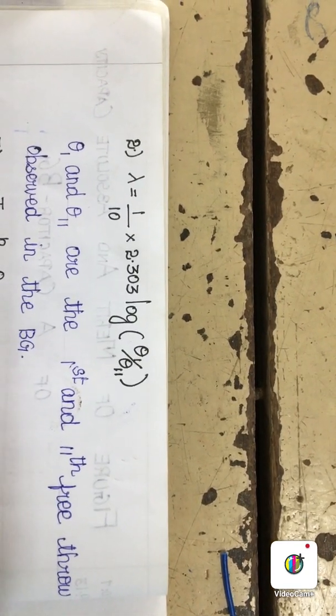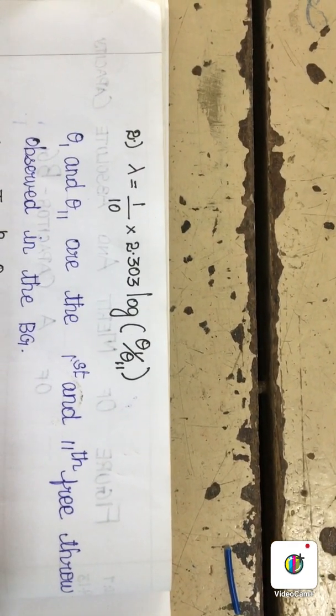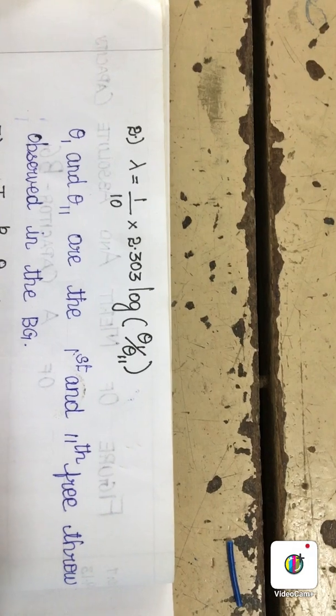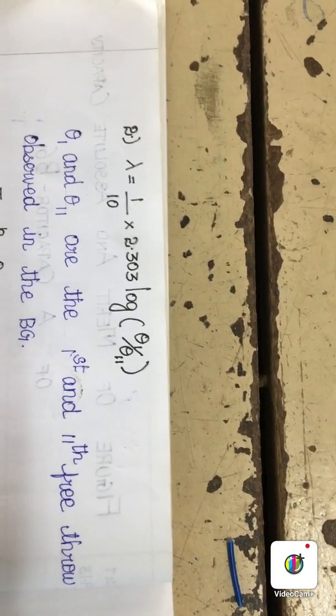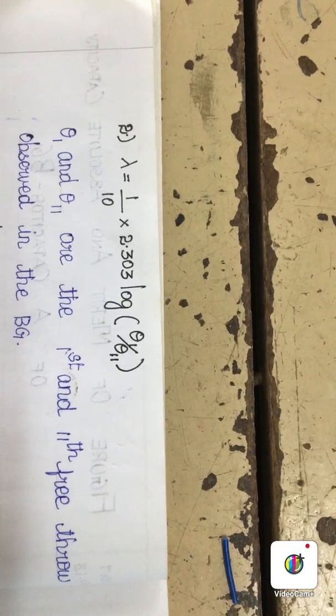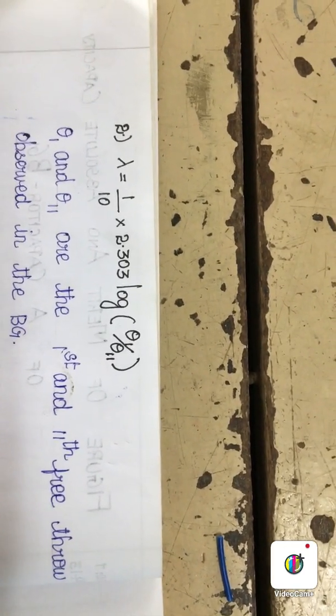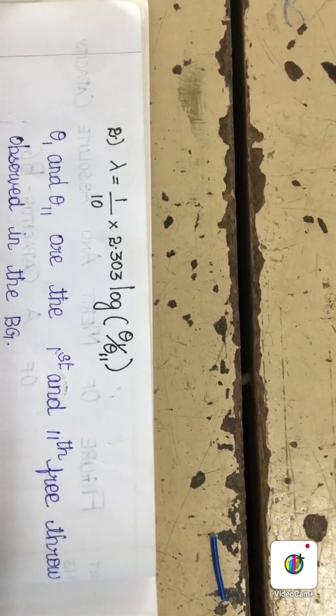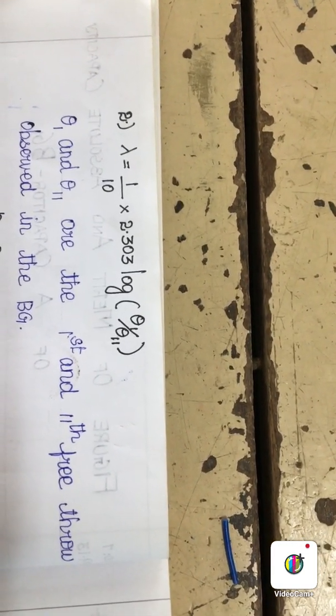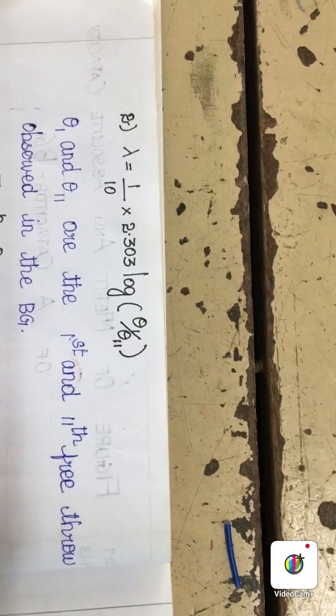The logarithmic decrement lambda can be calculated by observing the throws for theta 1 and theta 11. When the BG is set for free throw, the deflections theta 1 and theta 11 can be recorded. From those readings, lambda can be calculated with the help of this formula.